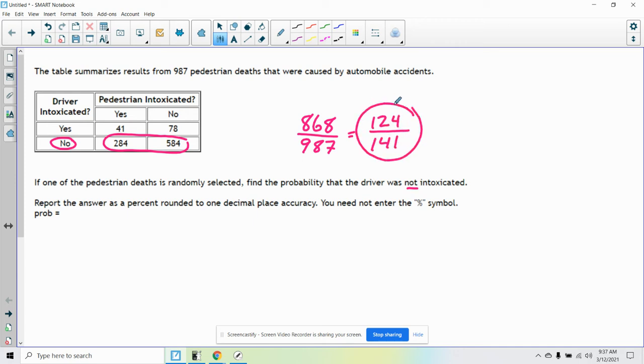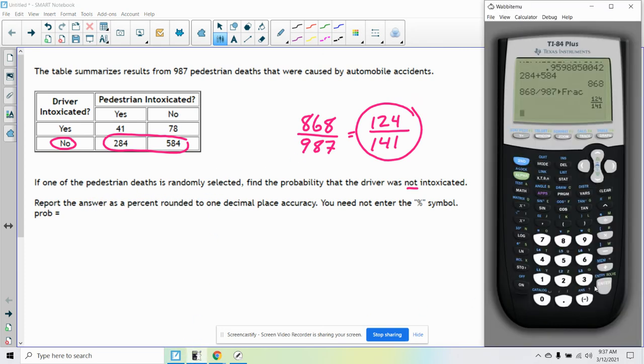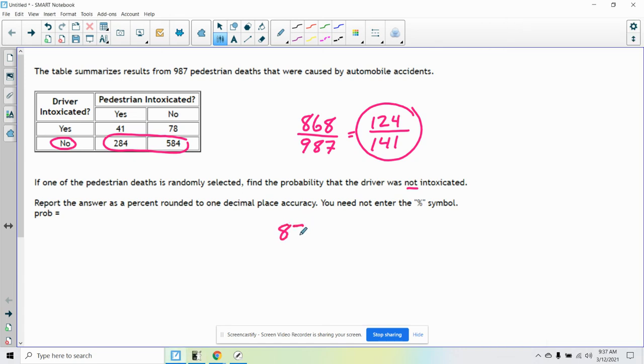And that is going to be your answer. If it wants it as a percent, let's just find the decimal. Let's just do 124 divided by 141. So I get 87.94. So as a percentage, it would be 87.9%. And that's your answer.